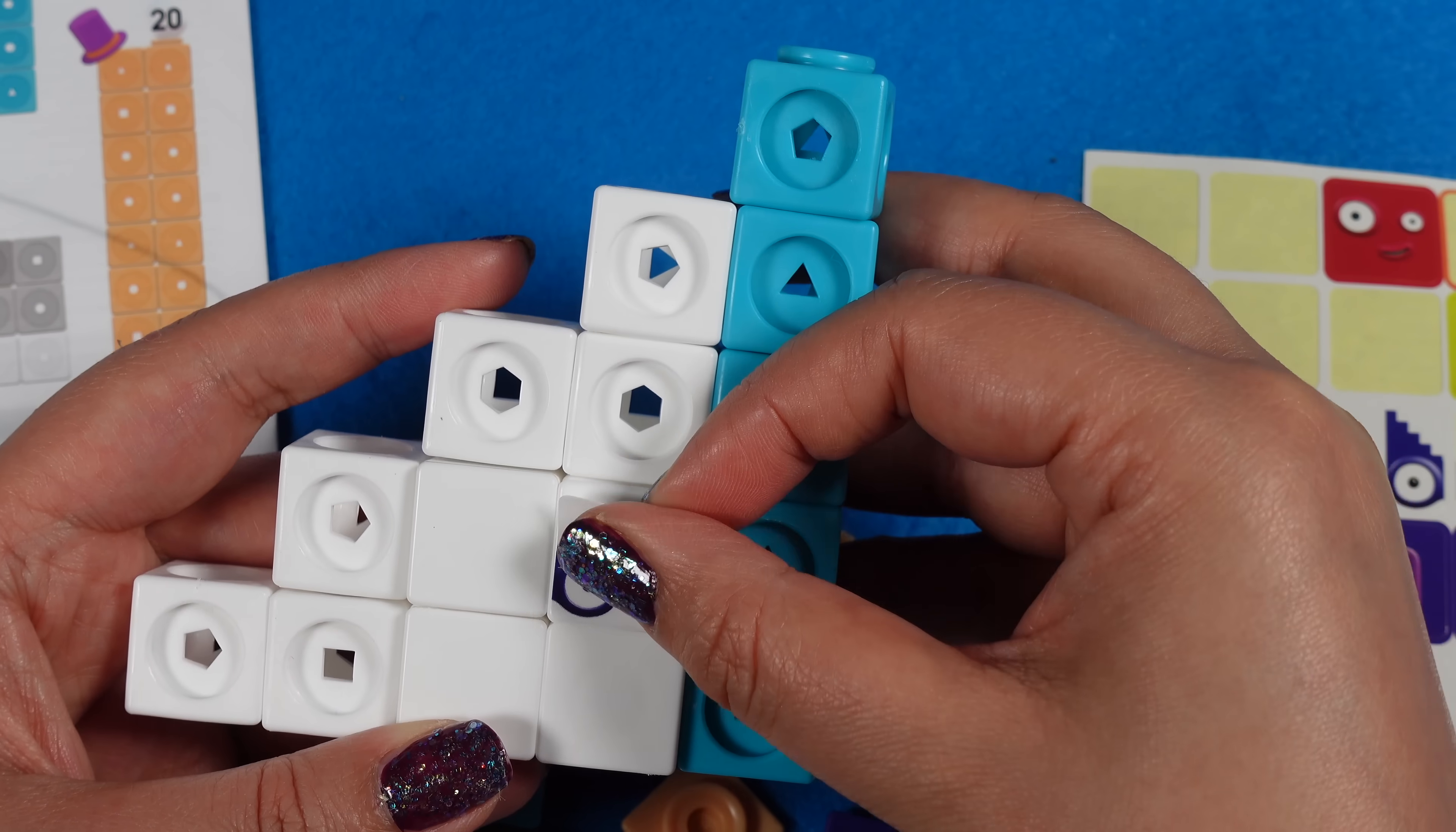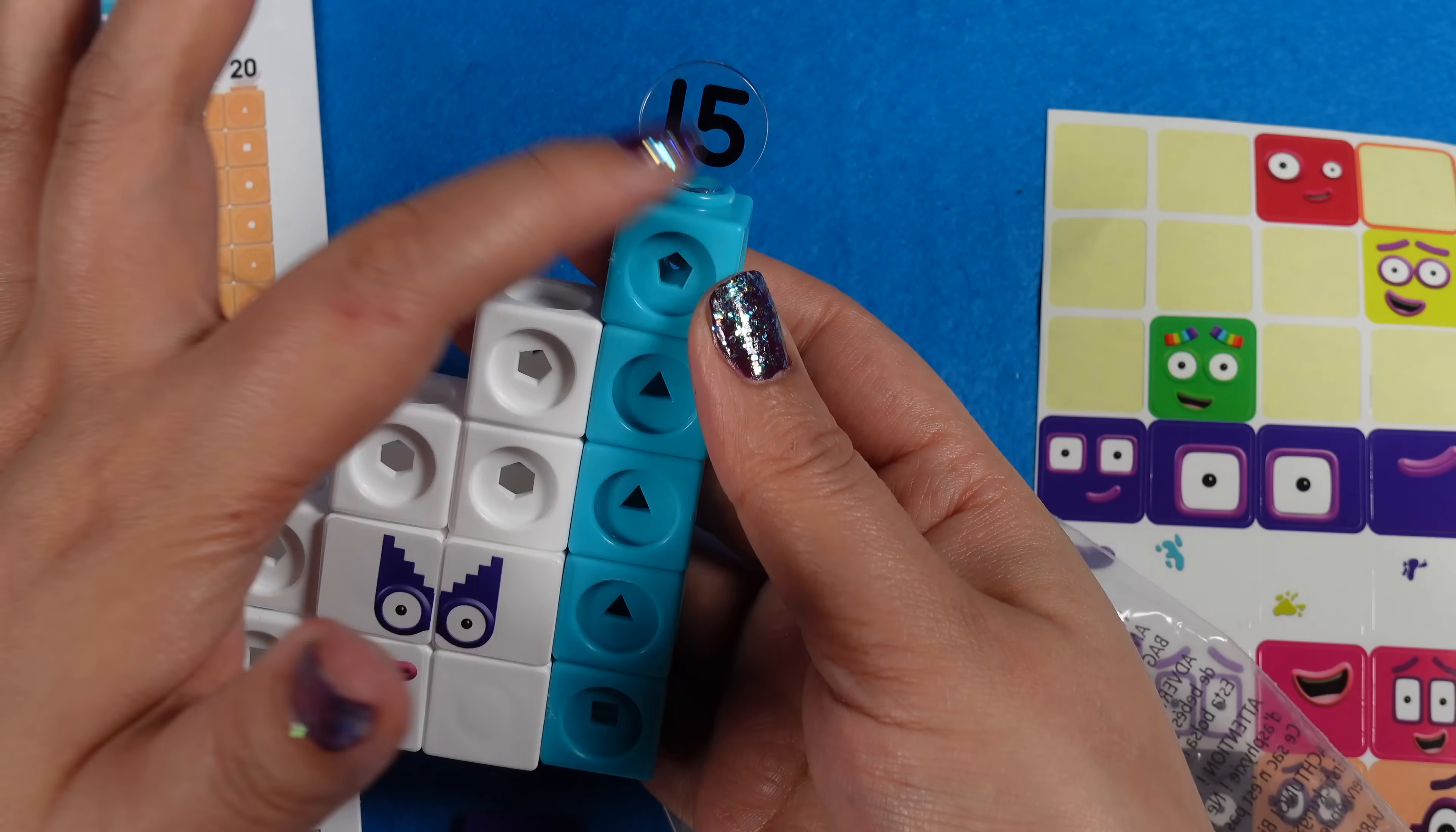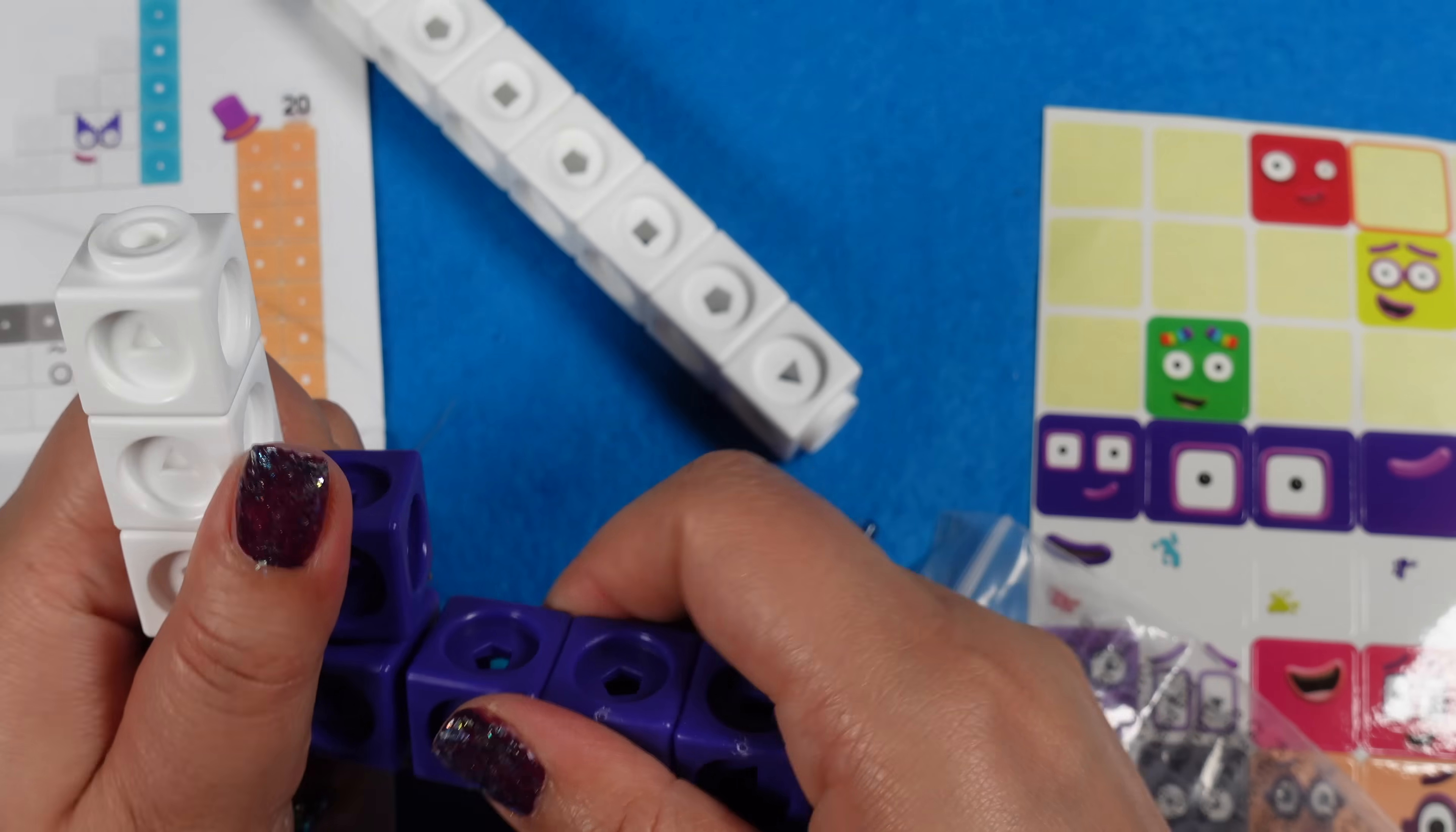And then adding on the face and adding the Numberling, which fits in perfectly on top of the Math Links Cubes. Then let's move on to number 16.